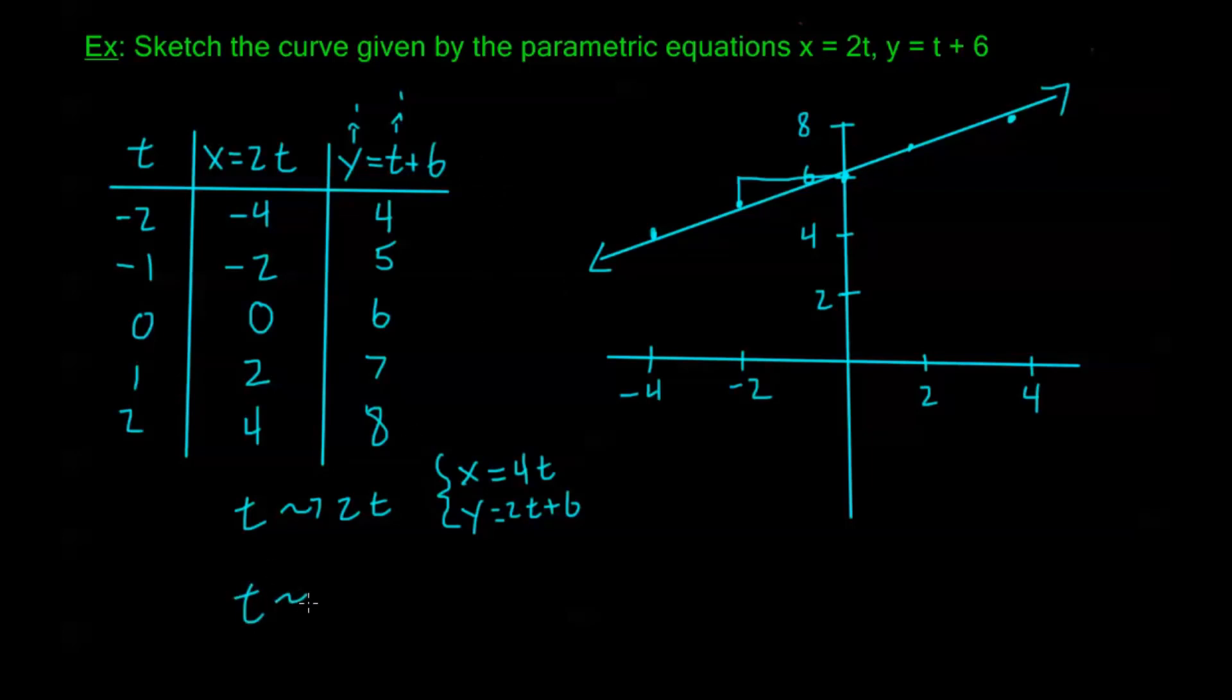If I were to do the same thing but replace t with negative t, my parametric equations would become x equals negative 2t, and y equals negative t plus 6. And again, we very quickly realize that graphing out some points, we're going to get the exact same line that we got with our original equations, but now as t increases, x and y are moving in the opposite direction.